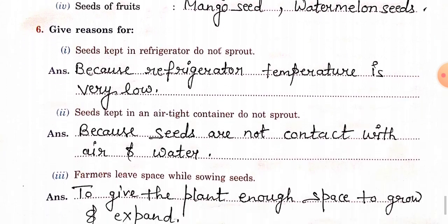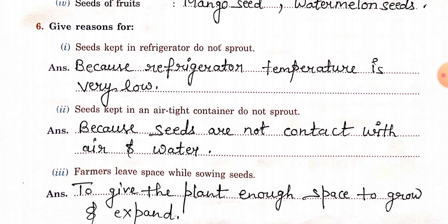Sixth question: give reasons. First — seeds kept in a refrigerator do not sprout, because the refrigerator temperature is very low. Second — seeds kept in an airtight container do not sprout, because seeds are not in contact with air and water. Third — farmers leave space while sowing seeds, to give the plant enough space to grow and expand.